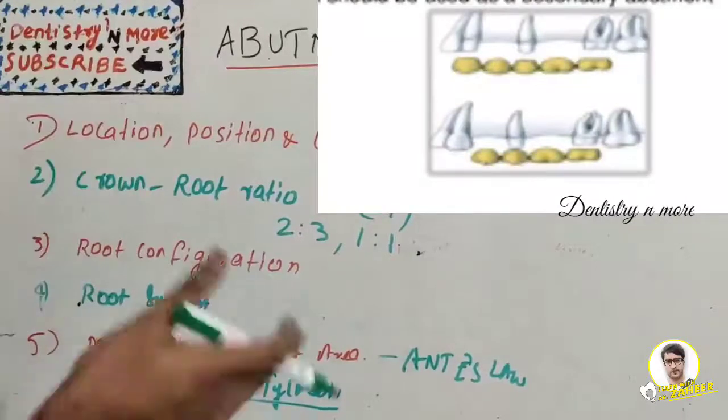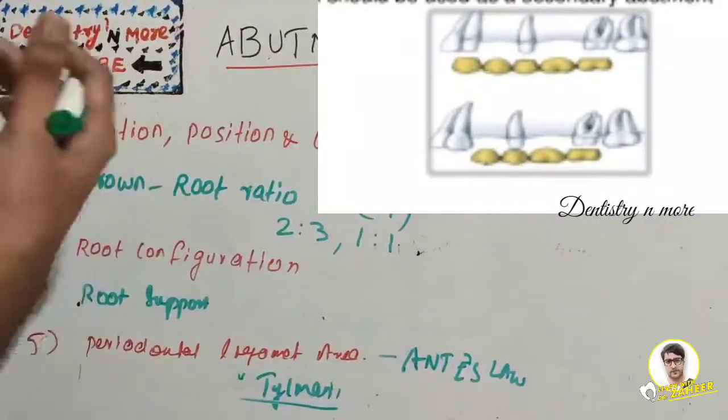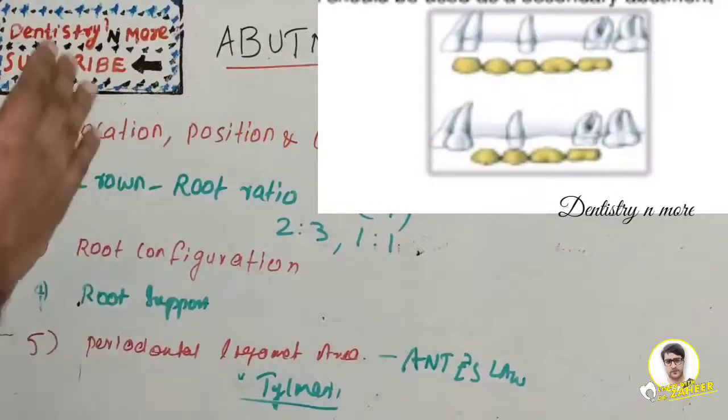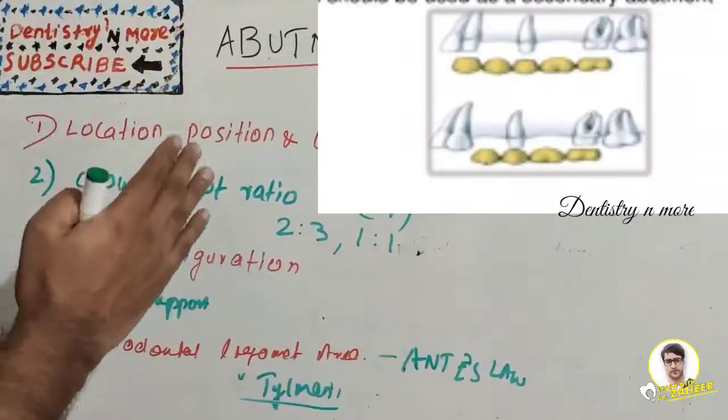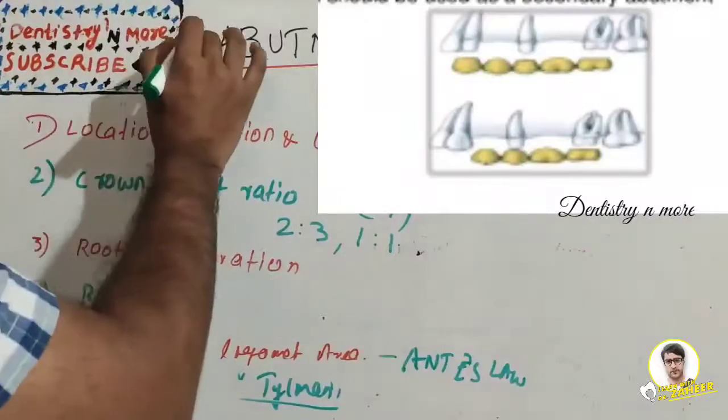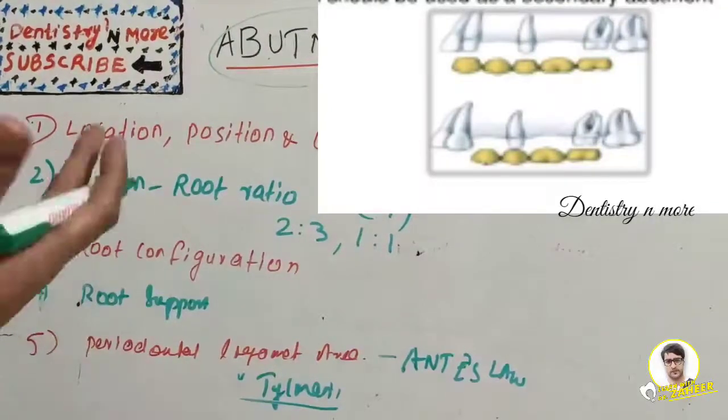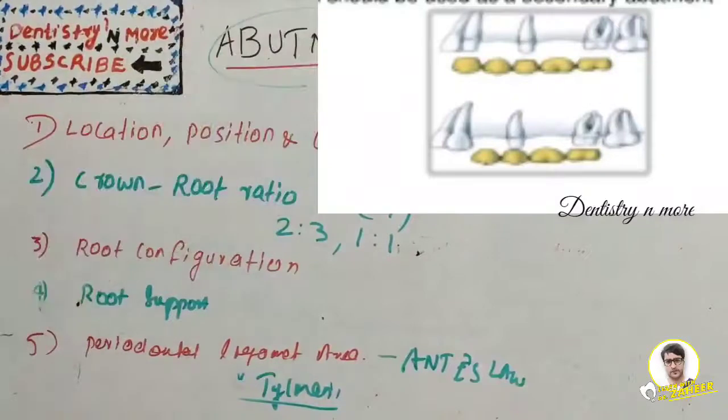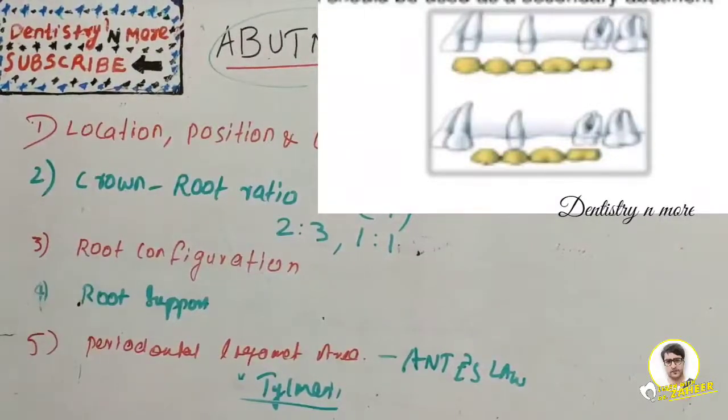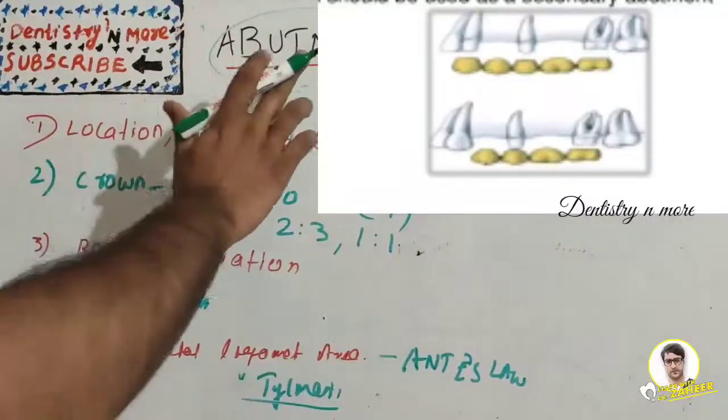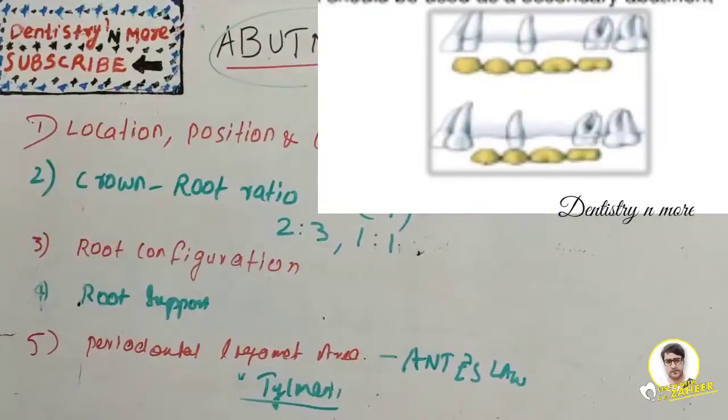It is the sum of the periodontal area of the abutment teeth. If you are replacing three teeth, the periodontal area of the abutment teeth should be greater than those three teeth. This law is simple: we need more periodontal area for the abutment teeth than the teeth to be replaced. The periodontal area of abutment should be calculated, and if it is not sufficient with respect to the teeth to be replaced, we need to take additional support as secondary abutment.